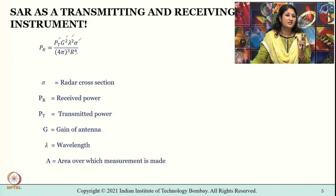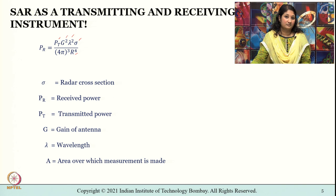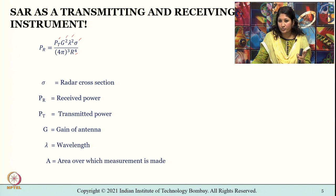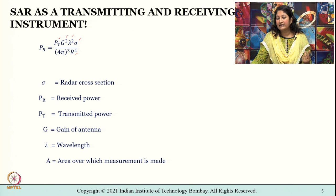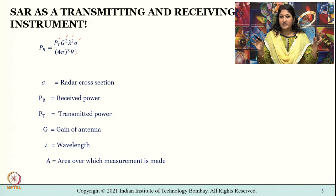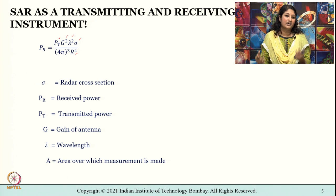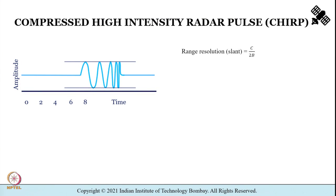This radar equation is the fundamental relationship between transmitted and received power. Remember, SAR is understood as an instrument that is both transmitting and receiving — there is no separate transmitter or separate receiver. It is worth recollecting that chirped pulses — CHIRP stands for Compressed High Intensity Radar Pulse.